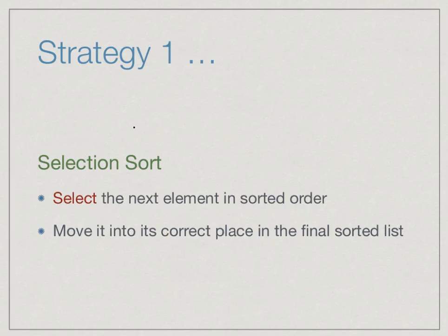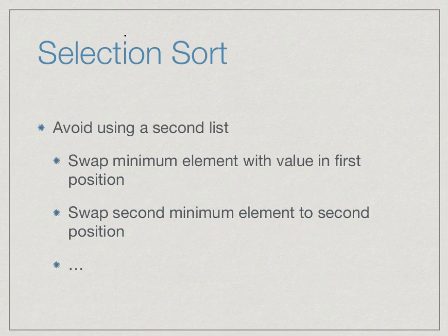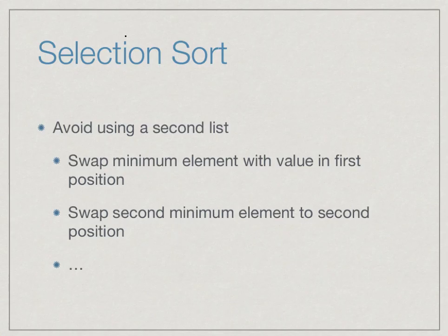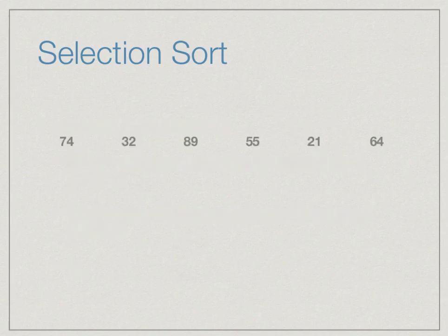This natural and intuitive strategy is called selection sort, because at each point we select the next element in sorted order and move it to the final sorted list. In the algorithm we just executed we needed to build a second list to store sorted values, but a little thought tells us we don't need to. Whenever we pull out the next smallest element, we can swap it with what is at the beginning of the current segment.